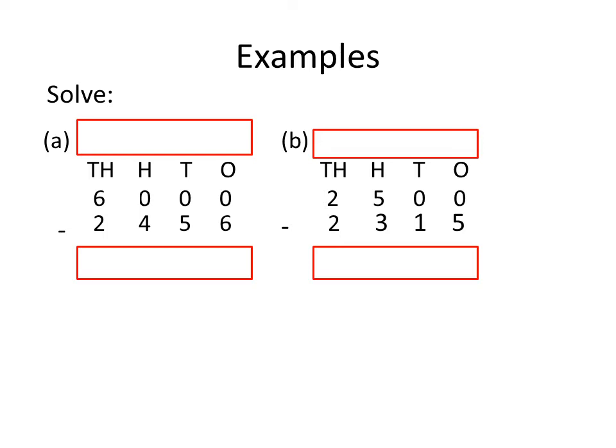So, we need to borrow from the 10's place. But look, even the 10's place has a 0, so we cannot borrow from the 10's place. Now, we need to borrow from the 100's place. But again, the 100's place also has a 0, so we cannot borrow from there either. So, what to do? Yes, we borrow from the 1000's place, because the 1000's place has 6.